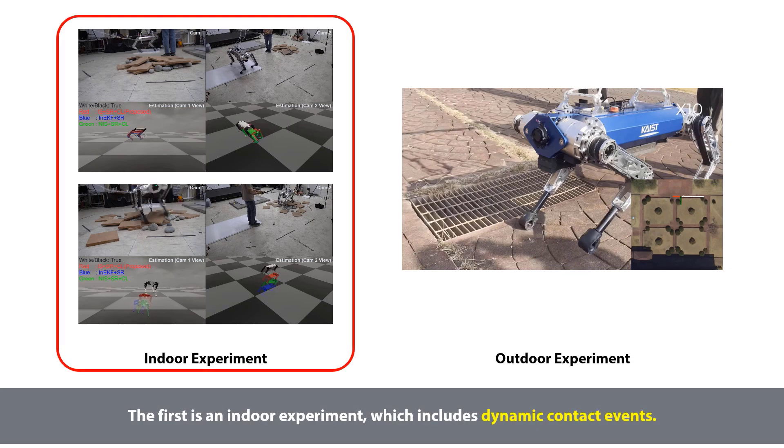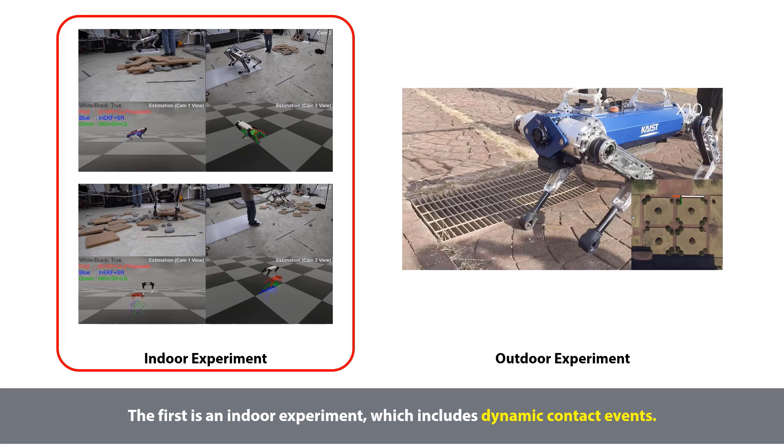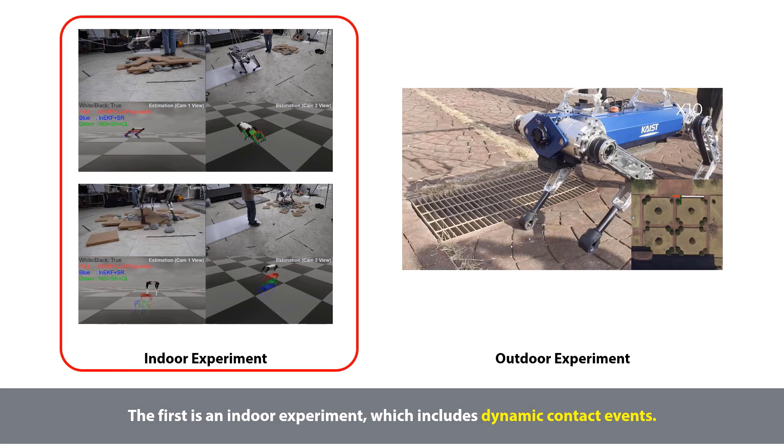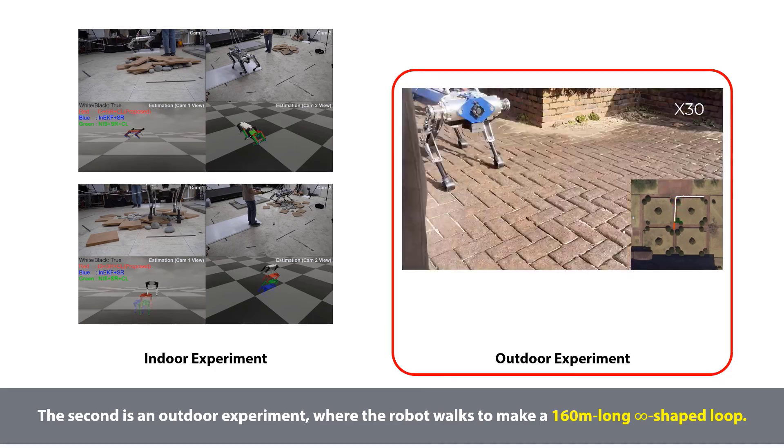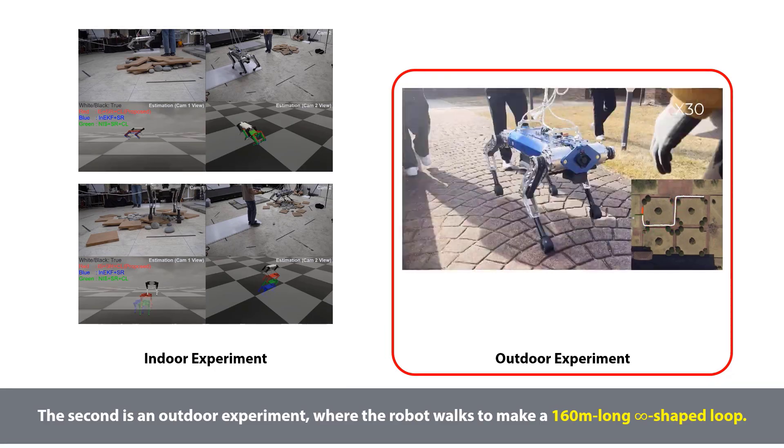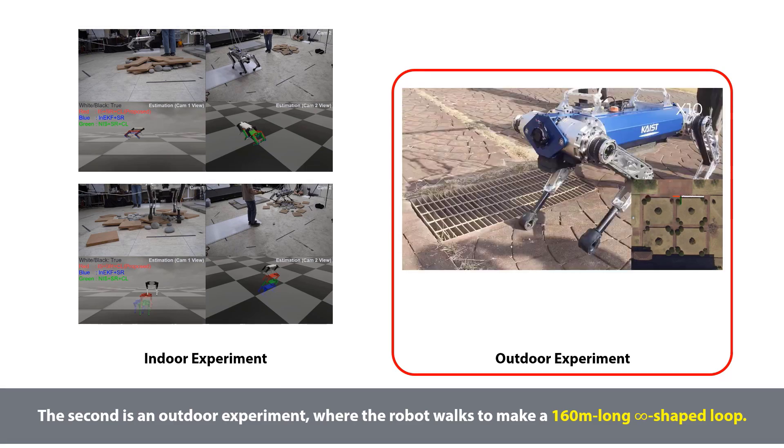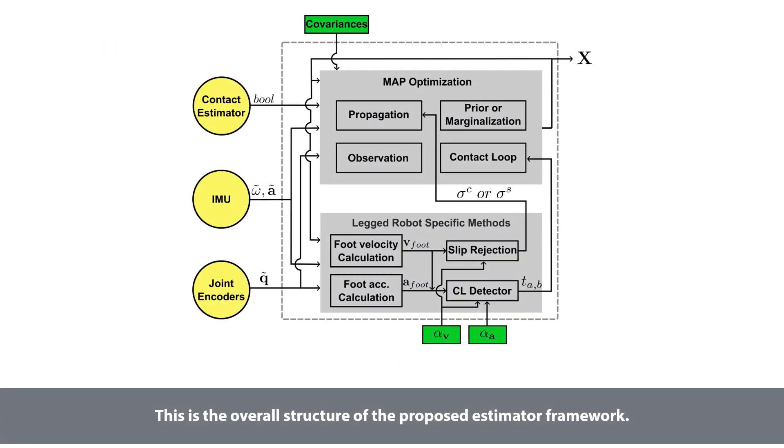The first is an indoor experiment, which includes dynamic contact events. The second is an outdoor experiment, where the robot walks to make a 160 meters long infinity-shaped loop.